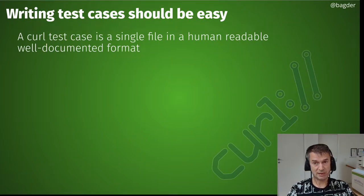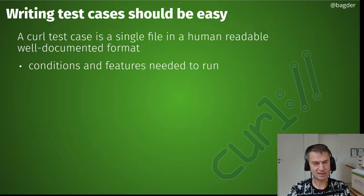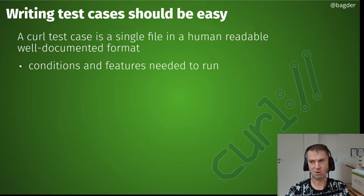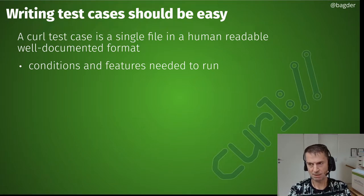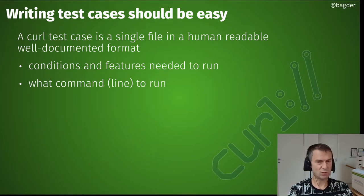Writing test cases is supposed to be easy. We have a test suite that makes it pretty easy to write and even read a test case in a semi-human-readable documented format. The simplest test case is maybe 50 lines or so. Each test case has conditions or features required for it to run — for example, we only test a feature if curl was built with SSH support, TLS support, or whatever particular feature is needed. The primary test case format is running curl command lines.